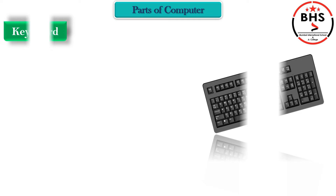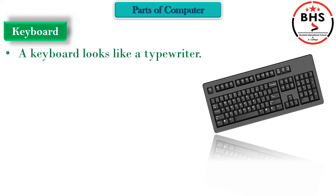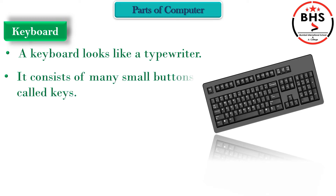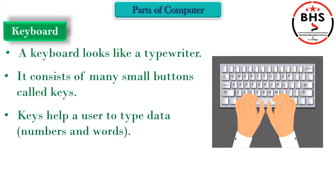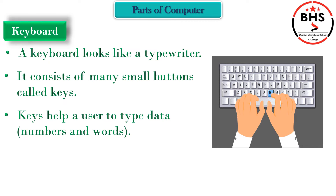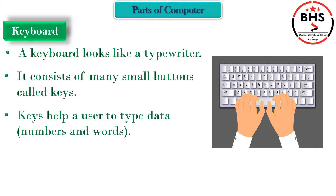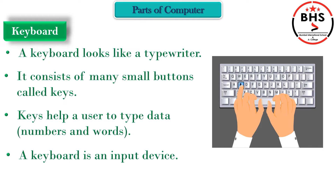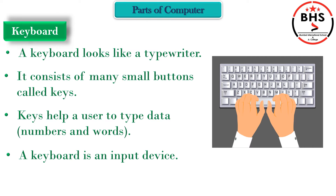Next is Keyboard. A keyboard looks like a typewriter. Children, a keyboard has many small buttons. These buttons are called Keys, as you can see here. Keys help us to type data — we can write numbers and words using the keys on the keyboard. A keyboard is an input device because we put information into the computer with the help of a keyboard.